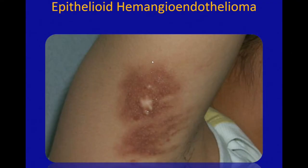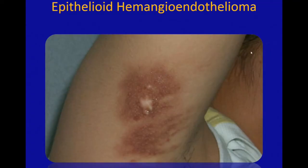Here's an example — there's not a specific appearance for this, but it's kind of an ill-defined nodule with some surrounding erythema and maybe some keratification. They don't have a very specific appearance clinically, and most patients don't have any idea that they have this, so it's hard to find good clinical pictures of epithelioid hemangioendothelioma.